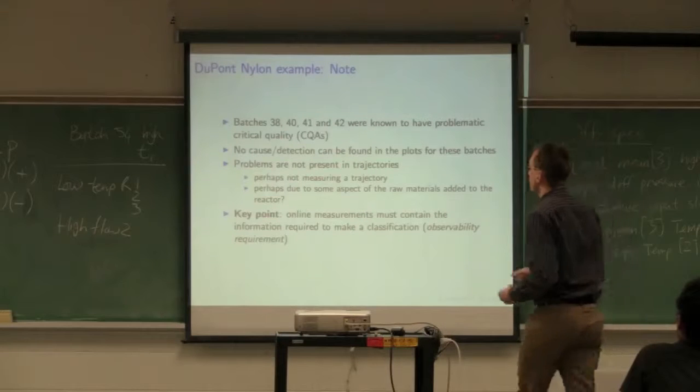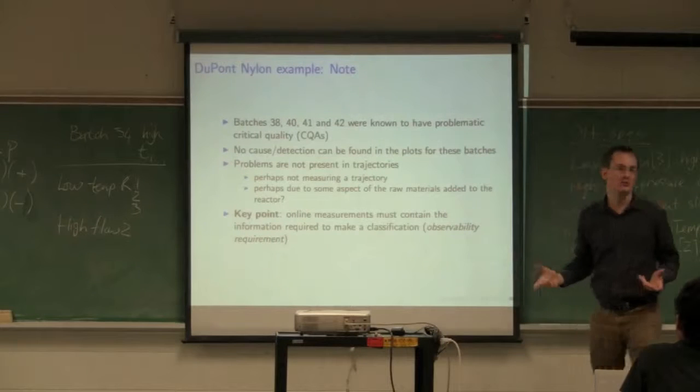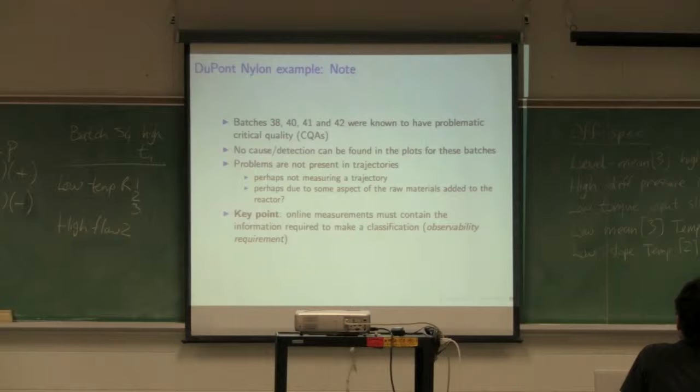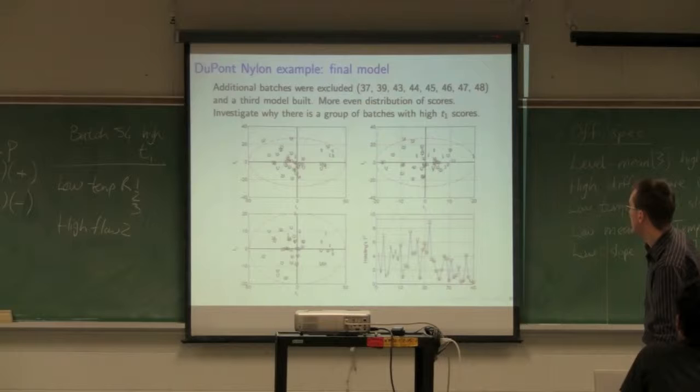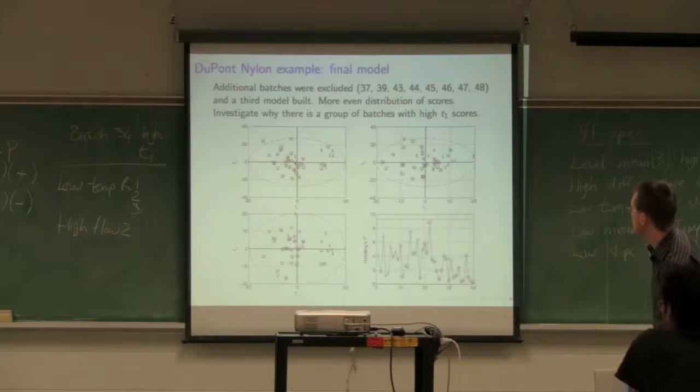Initially when this data was received, they told which batches were considered abnormal. We found most of those. Unfortunately four batches - 38, 40, 41, and 42 - do not show up in any of the score plots as being different from the good batches.